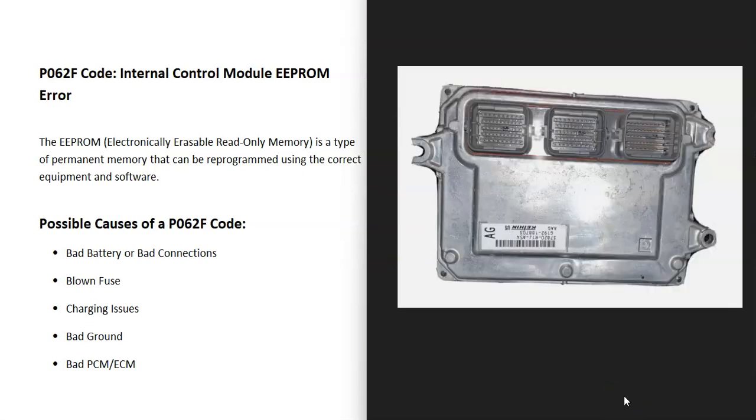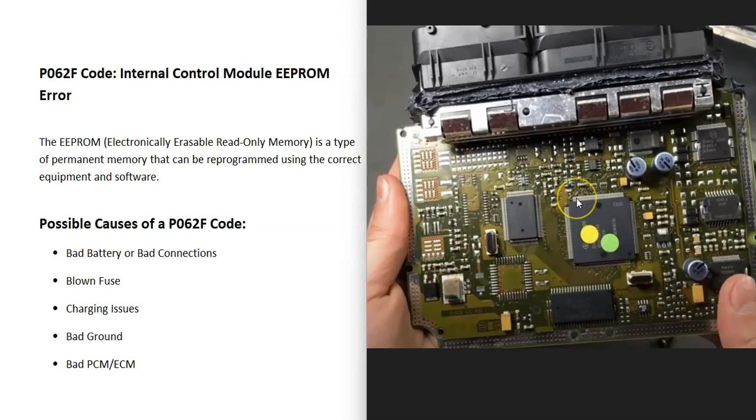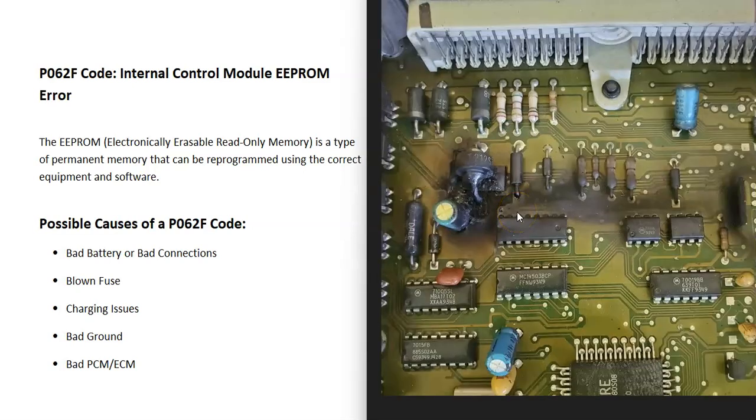And the last thing on the list is going to be that one of these computer modules has just gone bad and needs to be replaced. Quite often when one of these computer modules goes bad, they sometimes get burnt components on the board. This doesn't happen every time. Sometimes they can go bad and you don't see any burnt components. But it is common where they actually get burnt spots on the board or one of those caps blow up or something like that.